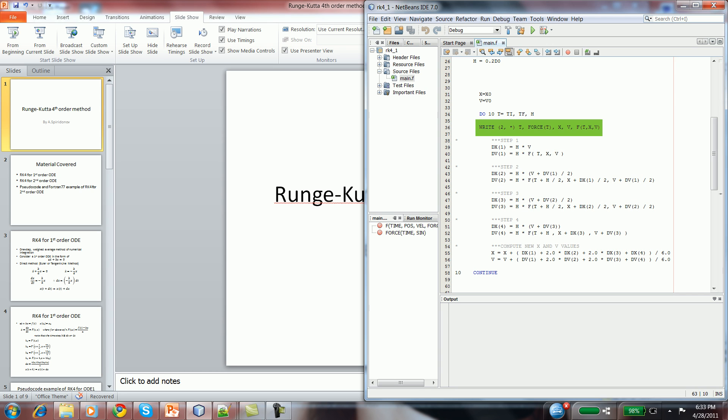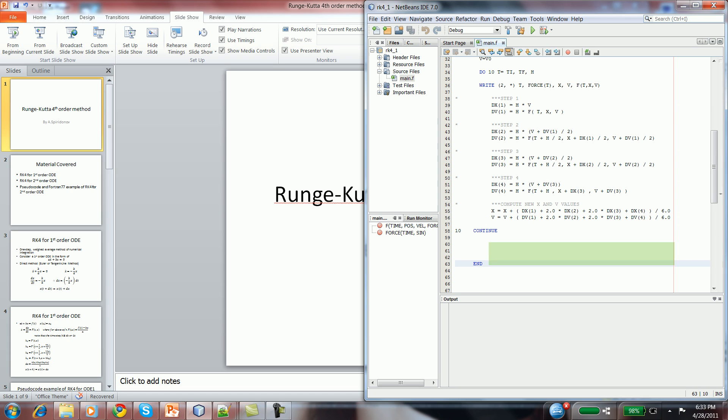First, I output the time, force, position, velocity, and acceleration. Then, I calculate the slopes. And then, I add the weight average of the changes in position to the current times and positions. And that's it.